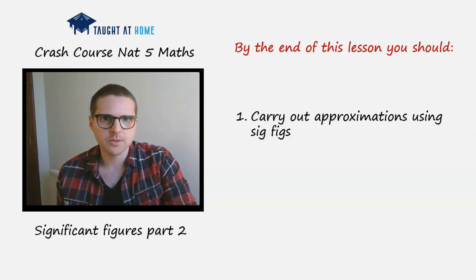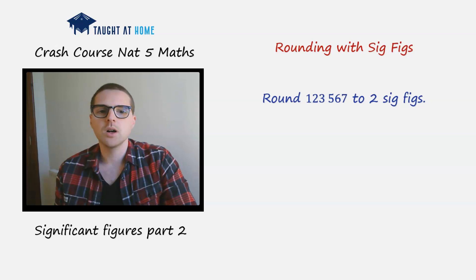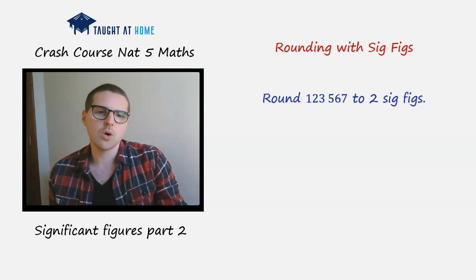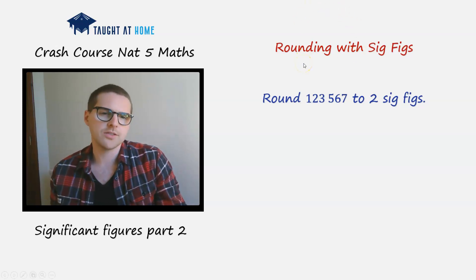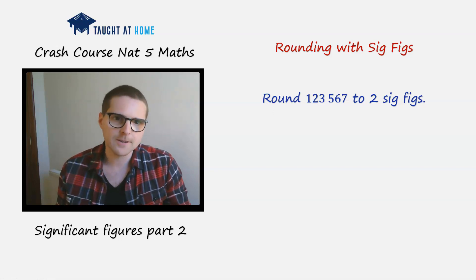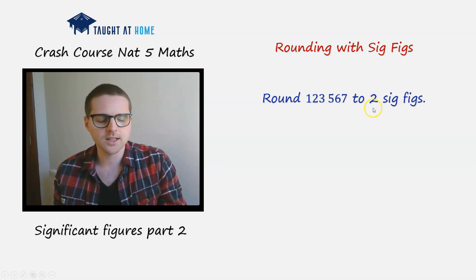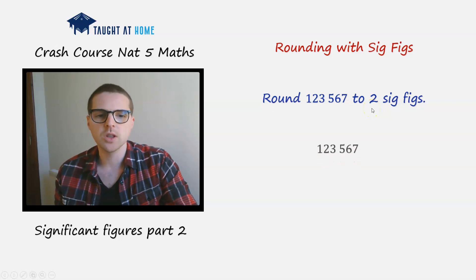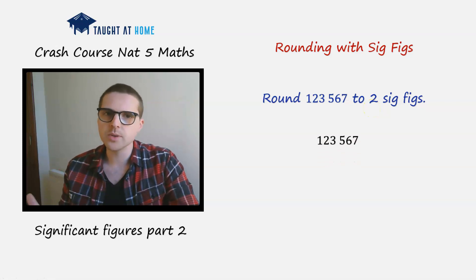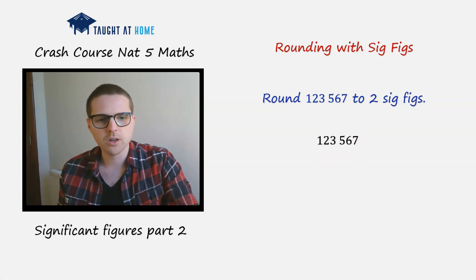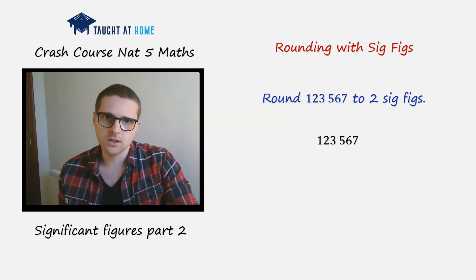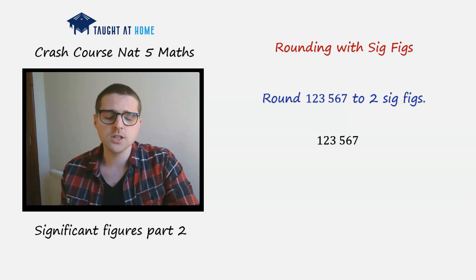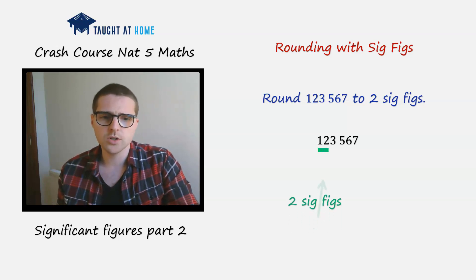Let's round this number — we've got 123,567 — and we're asked to round this to two significant figures. I always start off by writing down the number and then I'm going to underline the two significant figures that we're interested in. Remember, it's the first two non-zero numbers, so in this case it'll be the one and two.